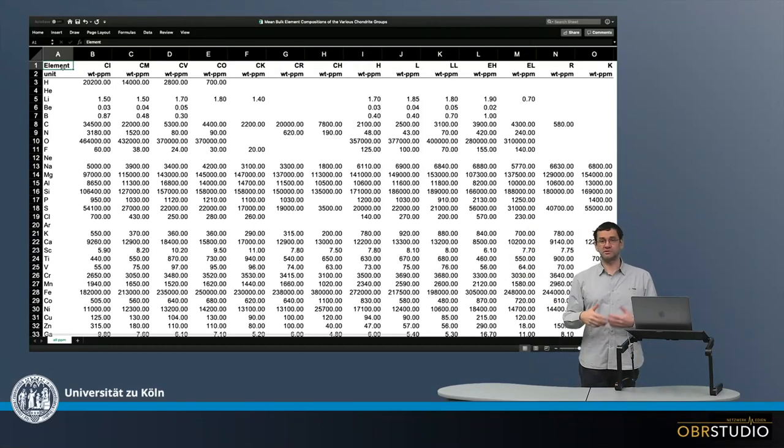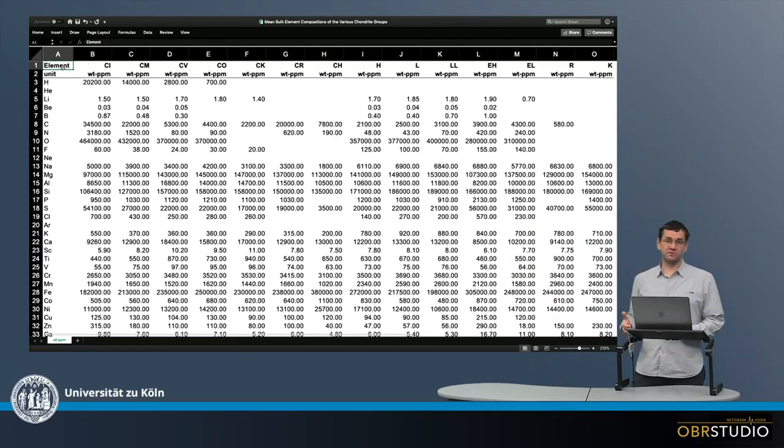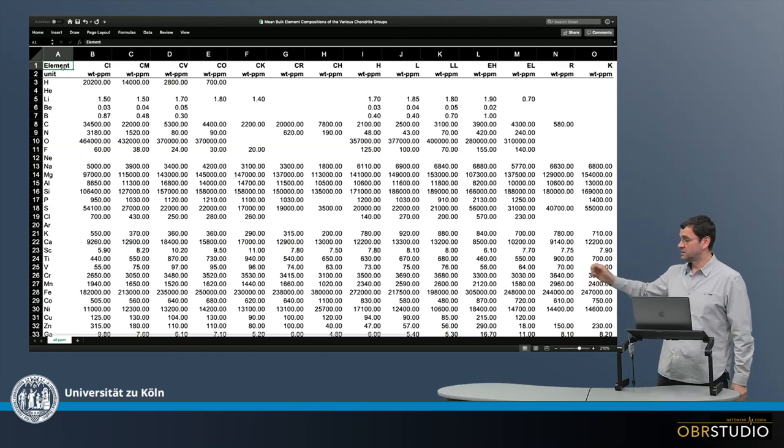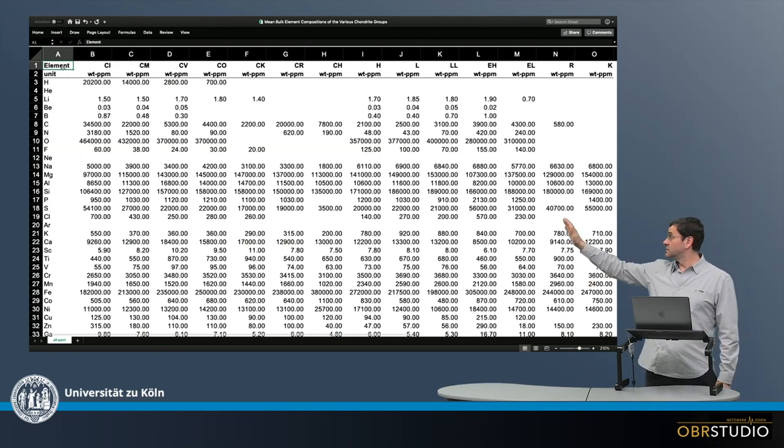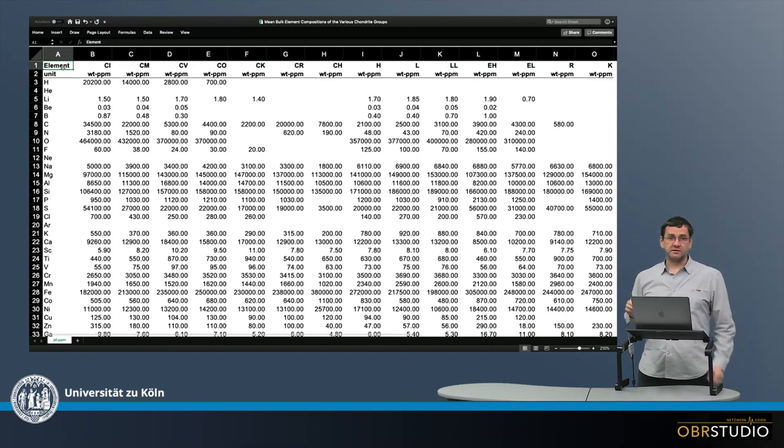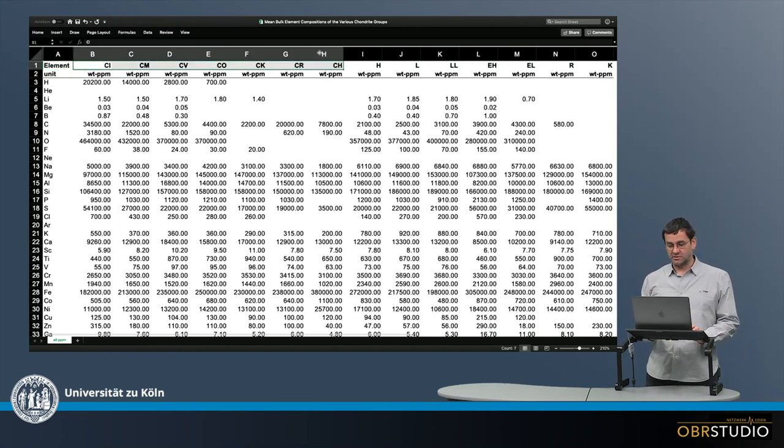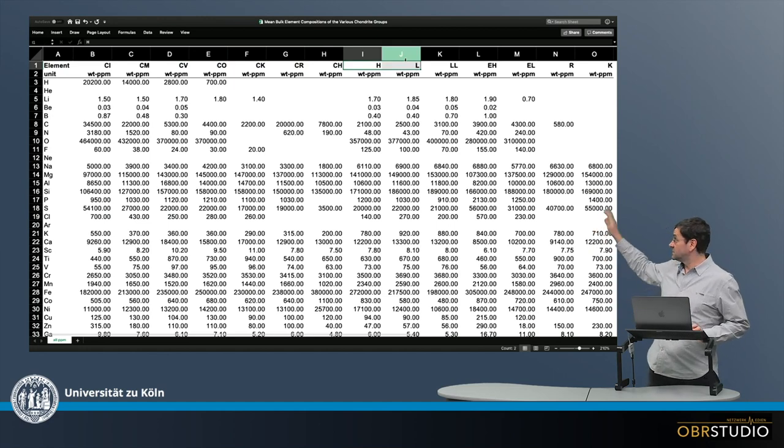This table is arguably one of the most simplest, but at the same time also most fundamental and important. It collects average bulk compositions of all the various chondrite groups. So the first column are the various elements, and then the following columns are the various chondrite groups. So the first couple of columns are the carbonaceous chondrites, ordinary chondrites, enstatite R and K chondrites.